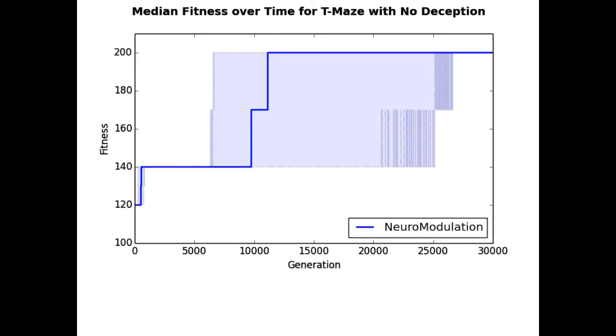Looking at evolution with neuromodulated networks, however, we see a similar result early, but eventually the agents evolve to perfectly solve the maze on all trials and reach a fitness of 200.